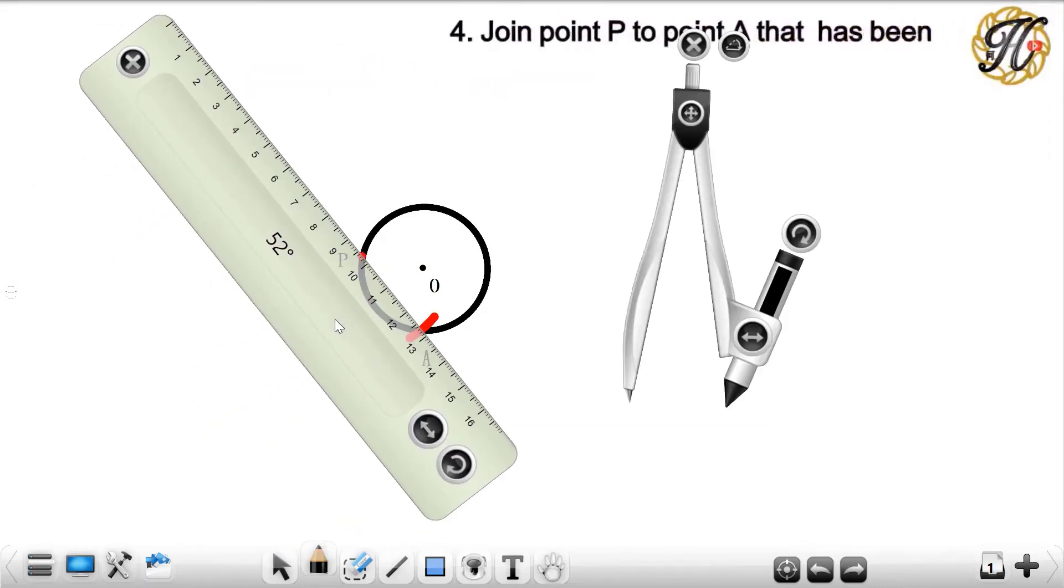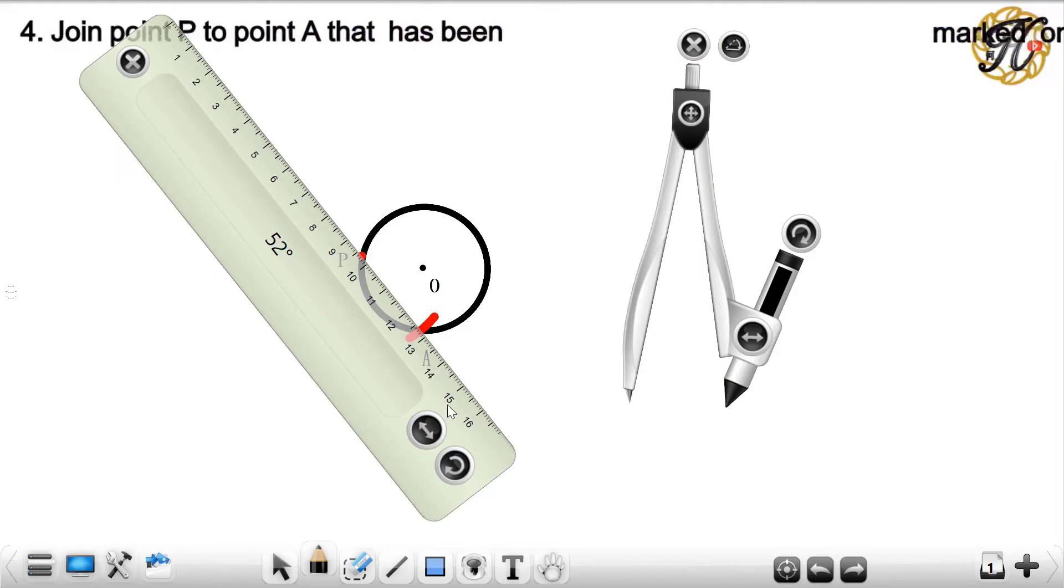Join point P to point A that has been marked on the circumference. Thus, the line PA is a cord.